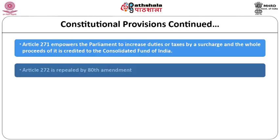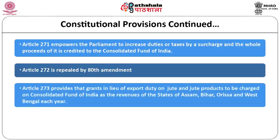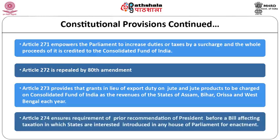Article 272 was repealed by the 80th Constitutional Amendment Act and has no relevance for determining center-state financial relations. Article 273 provides for grants in lieu of export duty on jute and jute products, to be charged on the Consolidated Fund of India. These grants are charged as revenue to the states of Assam, Bihar, Odisha, and West Bengal each year.